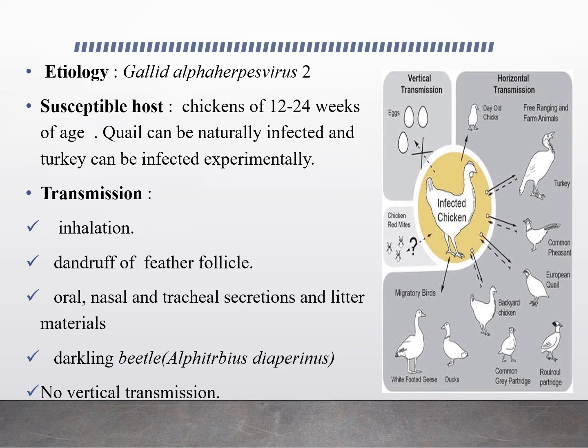Marek's disease is transmitted through inhalation of infected material from the environment. The virus can also persist for a considerable period of time in the dander of feather follicles. The virus can also be present in oral, nasal, and tracheal secretions. Darkling beetles can carry the virus for several weeks. Lastly, the disease is not transmitted through the egg — that is, there is no vertical transmission.